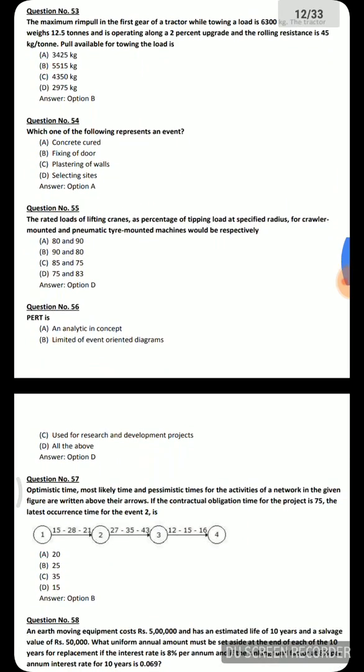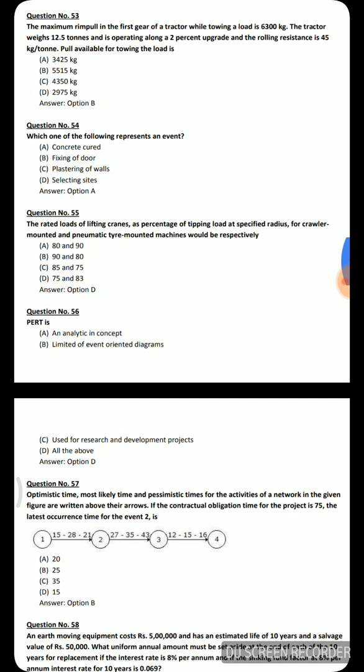Next question: the maximum rim pull in first gear of a tractor while towing a load of 6,300 kg — the tractor weighs 12.5 tons, is operating along a 2% upgrade, and rolling resistance is 45 kg per ton. Calculating using equilibrium conditions and the formula, the full tractive effort available for towing the load is 5,515 kg.